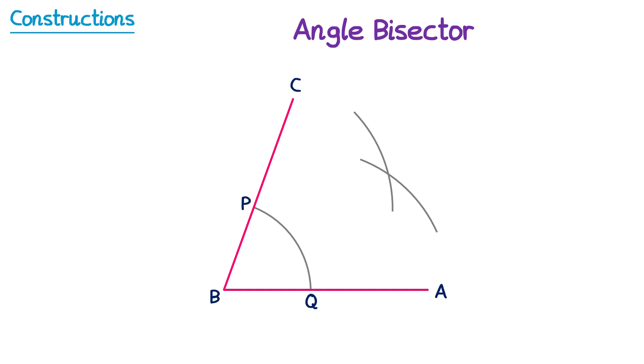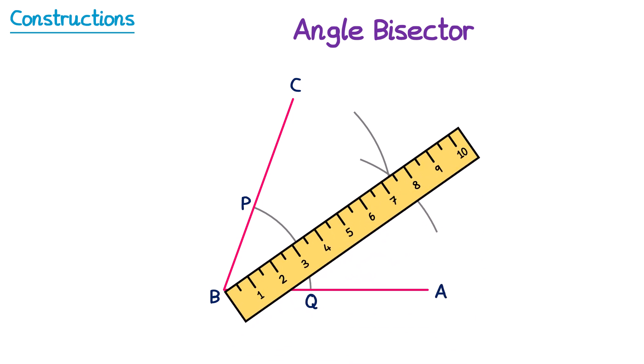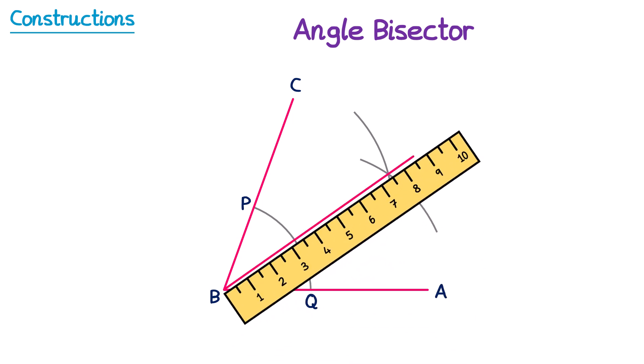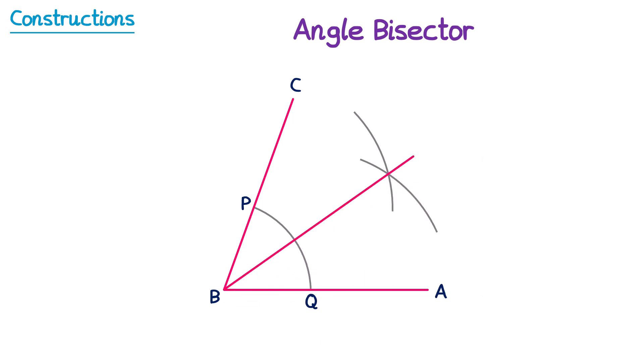If we then draw a straight line between the points where these two arcs met and the point B, we will have formed our angle bisector. This angle has now been split into two equal size smaller angles, so this green angle here is the same size as this blue angle here.